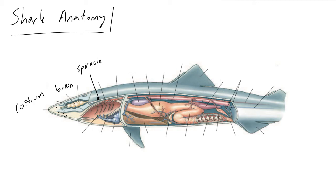Looking at the heart of a shark is pretty interesting. We've got right here the atrium, where deoxygenated blood is coming in and being collected. Beyond that we have something referred to as the ventricle. Unlike mammals with four-chambered hearts, there's only one atrium and one ventricle in sharks. The ventricle has the job of pumping the blood throughout the rest of the shark.